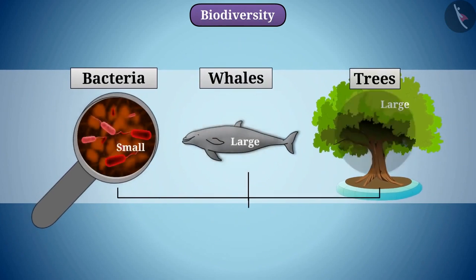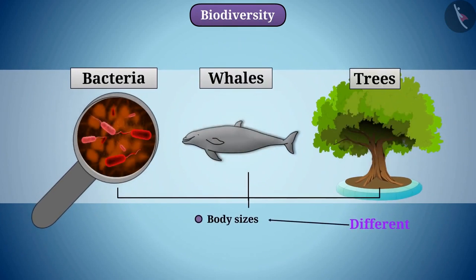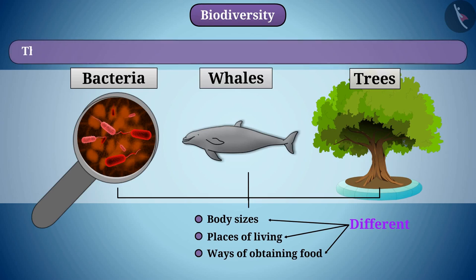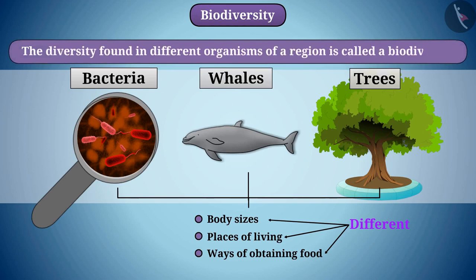Different organisms have different body sizes, places of living, ways of obtaining food, etc. In this way, the creatures on earth are full of variations. The diversity found in different organisms of a region is called biodiversity.